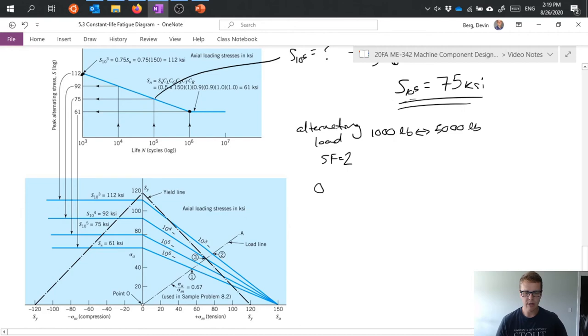So first we need to go ahead and calculate what our mean stress would be. Well we've got our alternating situation here right 1000 to 5000 pounds so let's say that we can take our mean force and divide that by an area. Area is unknown because we don't know the diameter that's what we're solving for. So we get 3000 over A. If we factor in a safety factor that means we're looking for 6000 over A. So basically our stress we have to double our stress effectively if we want to take into account that safety factor.